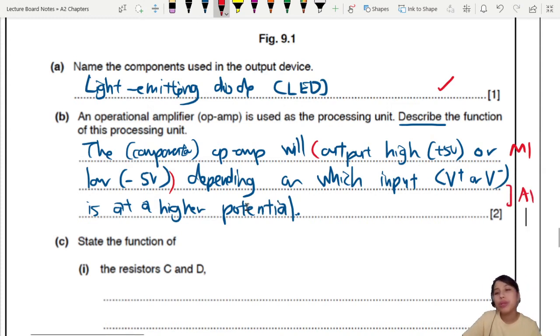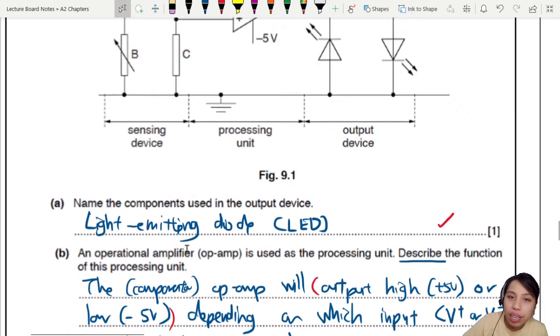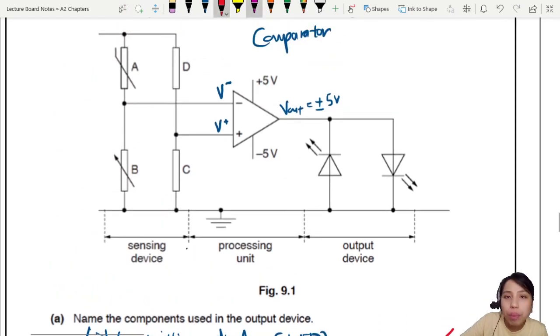That's the proper way to say it. Higher potential. Two marks. One is you say it will output high or low. Depending on which input is at a higher potential. So you're comparing between inputs. One example is let's say the potential here is 18 volts. Down here is 16 volts. Which one is bigger? V minus. So your output will be negative 5 volts. Negative wins. So negative 5 out. That's just what it means. You compare between both.